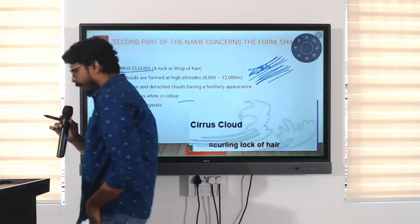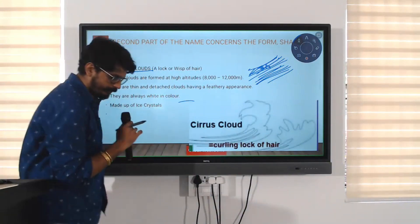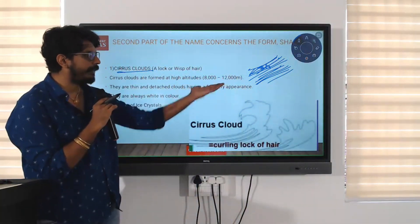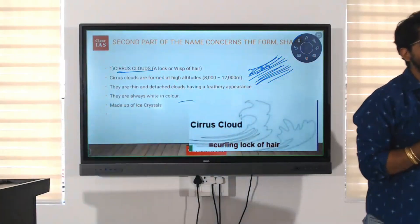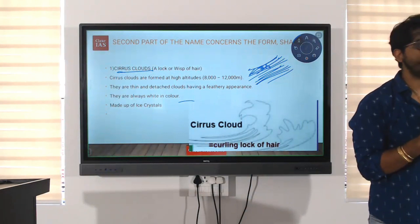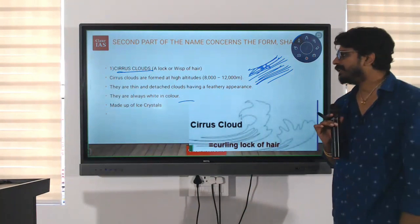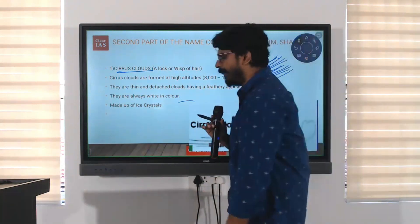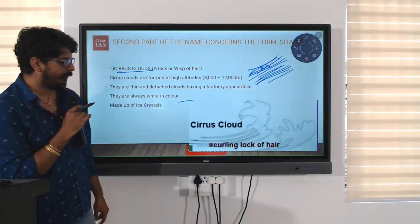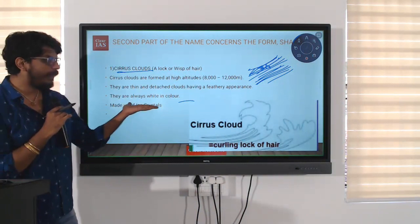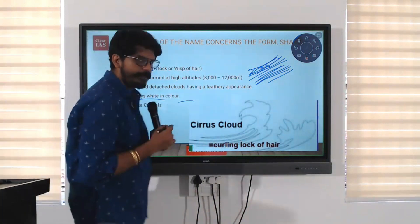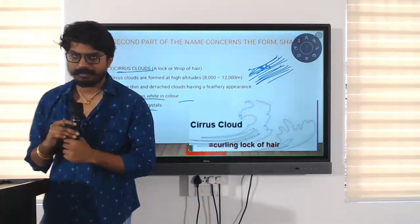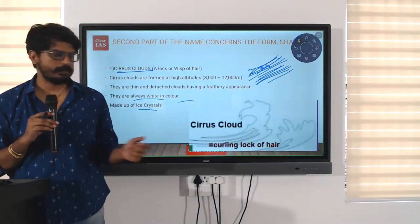Cirrus clouds are formed at a high altitude in the range of 8,000 to 12,000 meters. Because they are at such a height, they contain ice crystals. They are thin and detached clouds having a feathery appearance. They are always white in color and are made up of ice crystals.